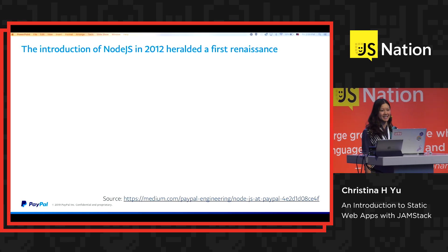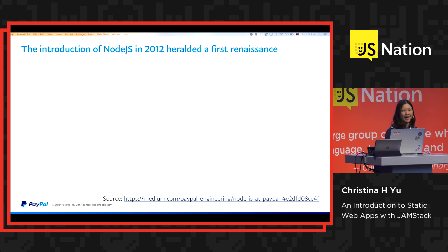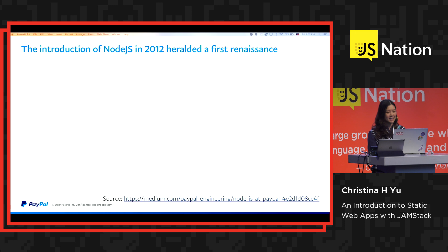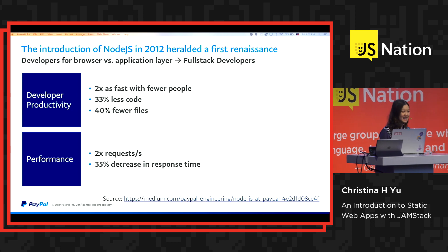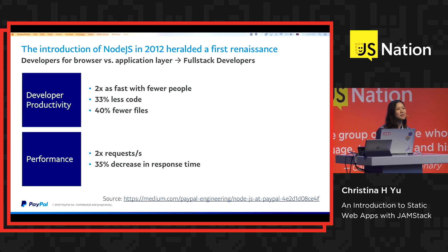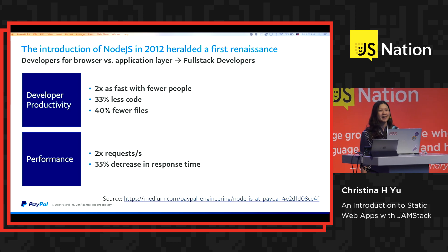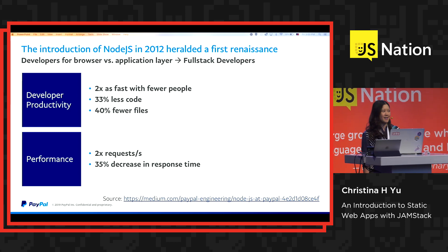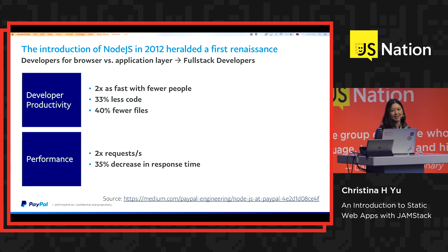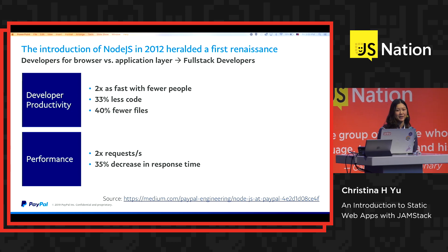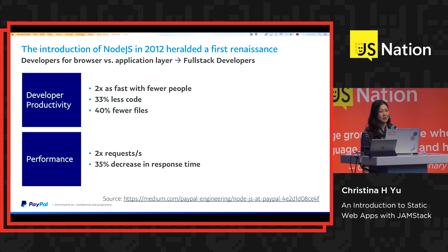Let's rewind a bit in history. In 2012, the introduction of Node.js at PayPal heralded a first renaissance. Previously, developers for the browser using HTML, CSS, and JavaScript were separate from those who worked on the application layer as Java developers. Imagine having to link together two pages — as a UI developer, I would have to talk to my Java engineer to do that. But with the introduction of Node.js, the JavaScript full-stack developer was born.